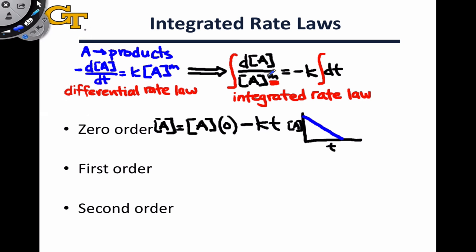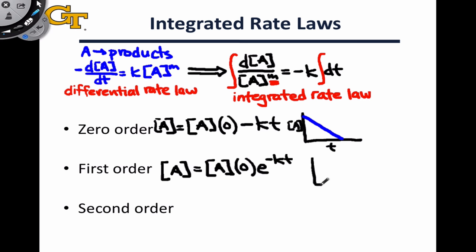In the first-order case, this M value is equal to 1, and the resulting integrated rate law says that the concentration of A is equal to that initial concentration A₀ times e to the negative KT. So this is an exponential decay of the concentration of A with time. This decrease is now curved rather than linear, and notice that the rate decreases as time goes on and the concentration decreases. This is consistent with the differential rate law, which says the rate is directly proportional to the concentration, so the curve flattens out as we move forward in time.